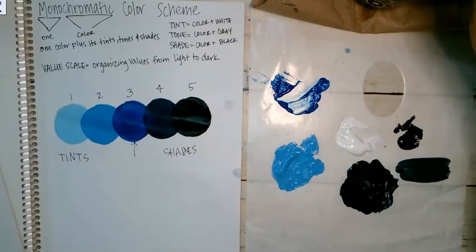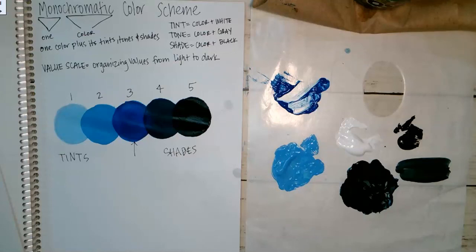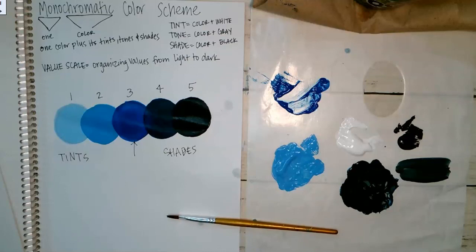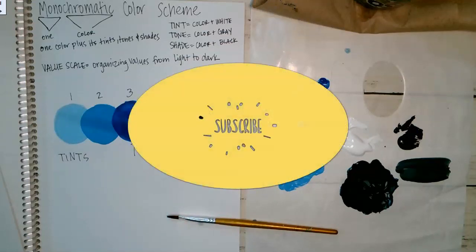That's our monochromatic color scheme — pretty cool. We're going to be using this in a painting, using monochromatic color schemes to show atmospheric perspective, so we'll talk about that next time. That's the video for today. Thanks for being here. If you're watching on YouTube and not in my high school classes, I would love your subscription — click the like and subscribe button below. See you in the next video, bye-bye!